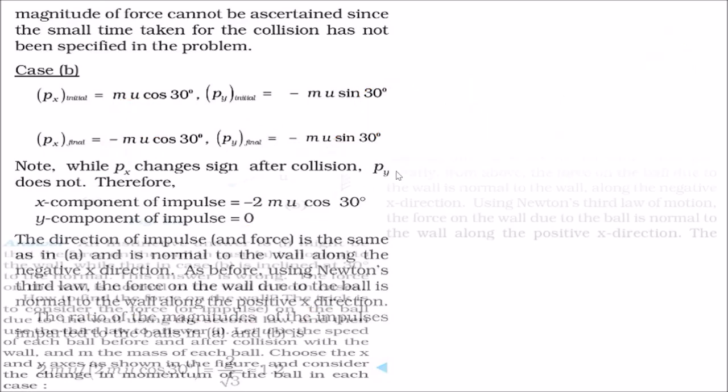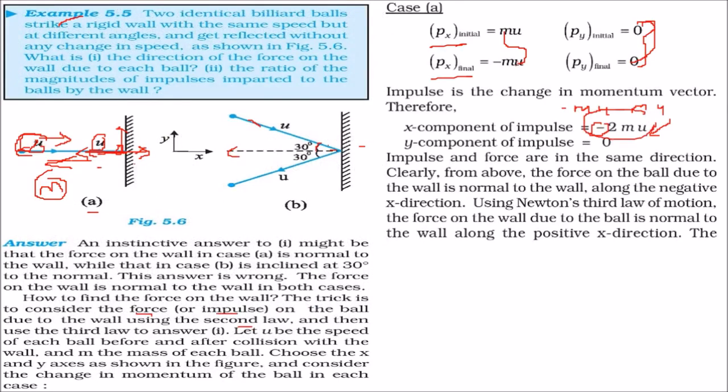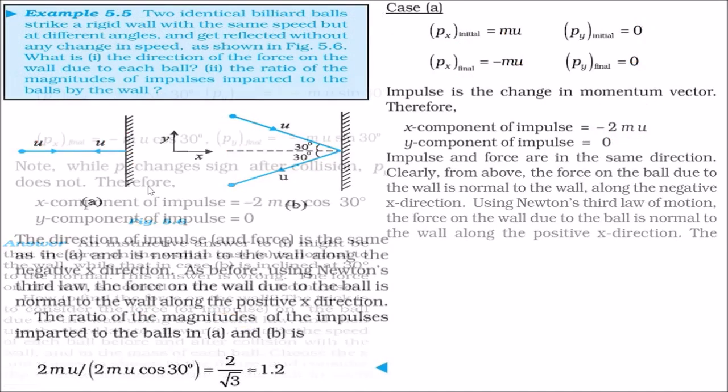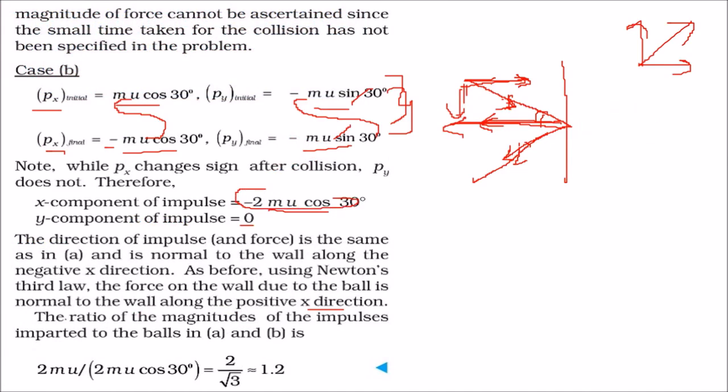Previously, what it came? It was this value. Then we got this value. Divide 2 MU by, rather minus sign will be cancelled. So, 2 MU by 2 MU cos 30 degree, which would be 2 by root 3, which comes to 1.2.